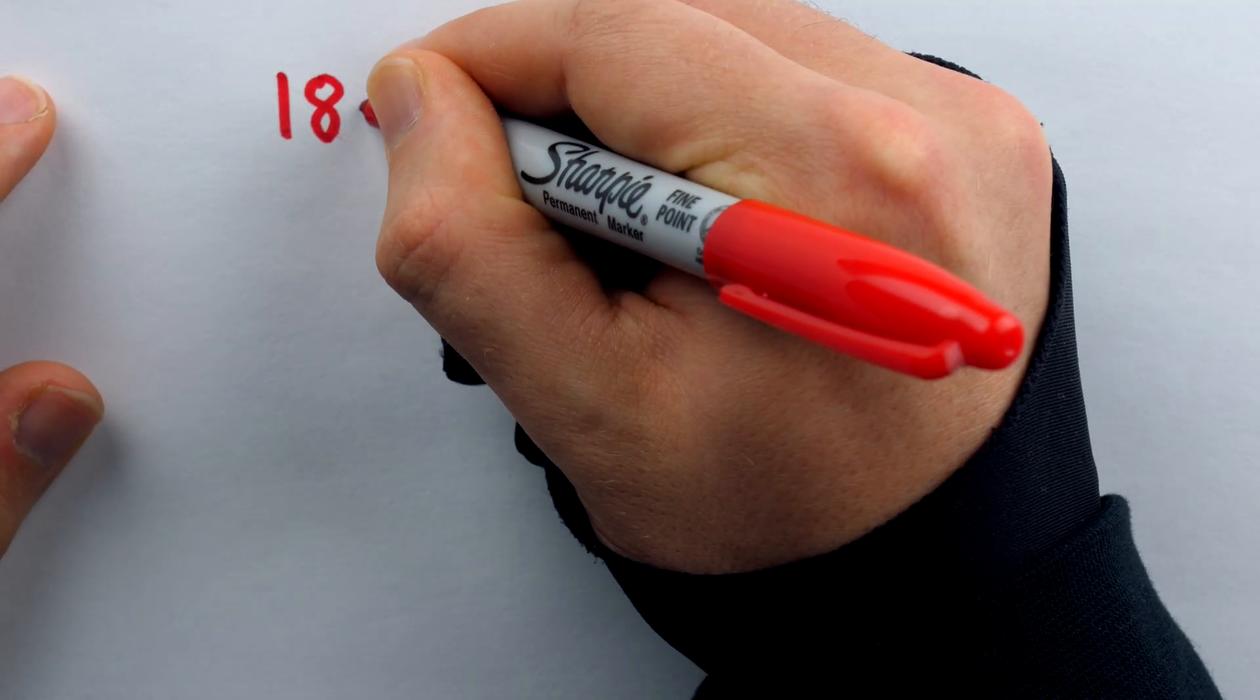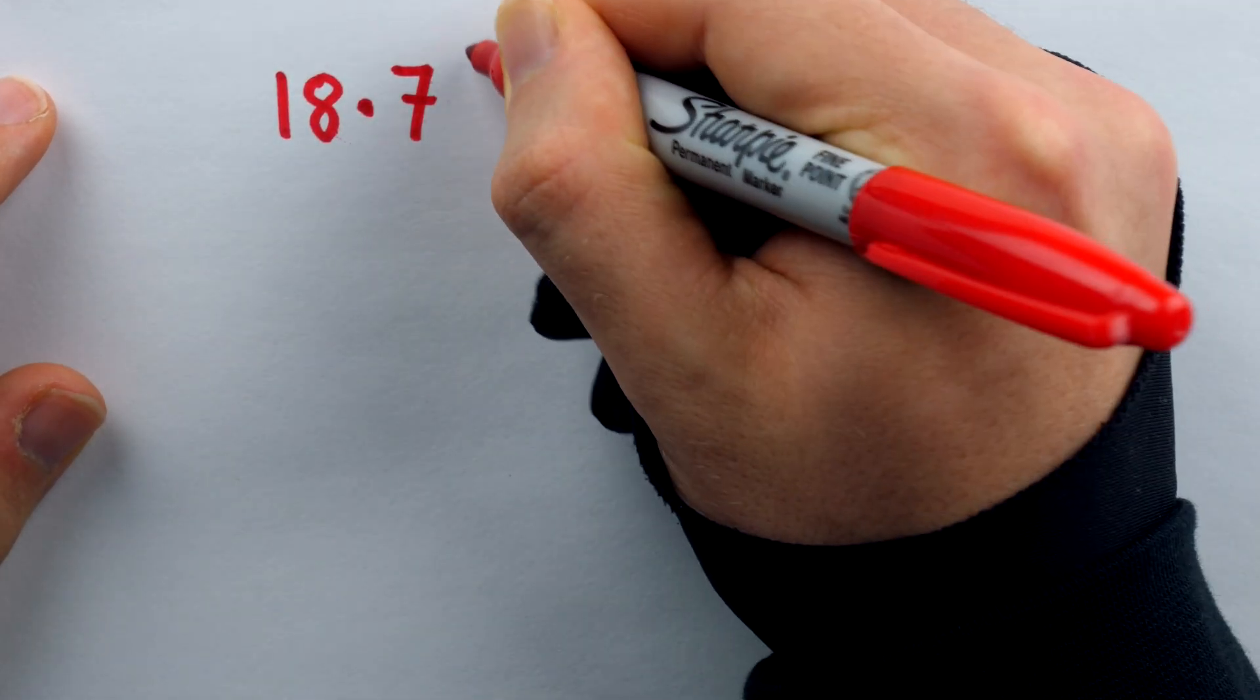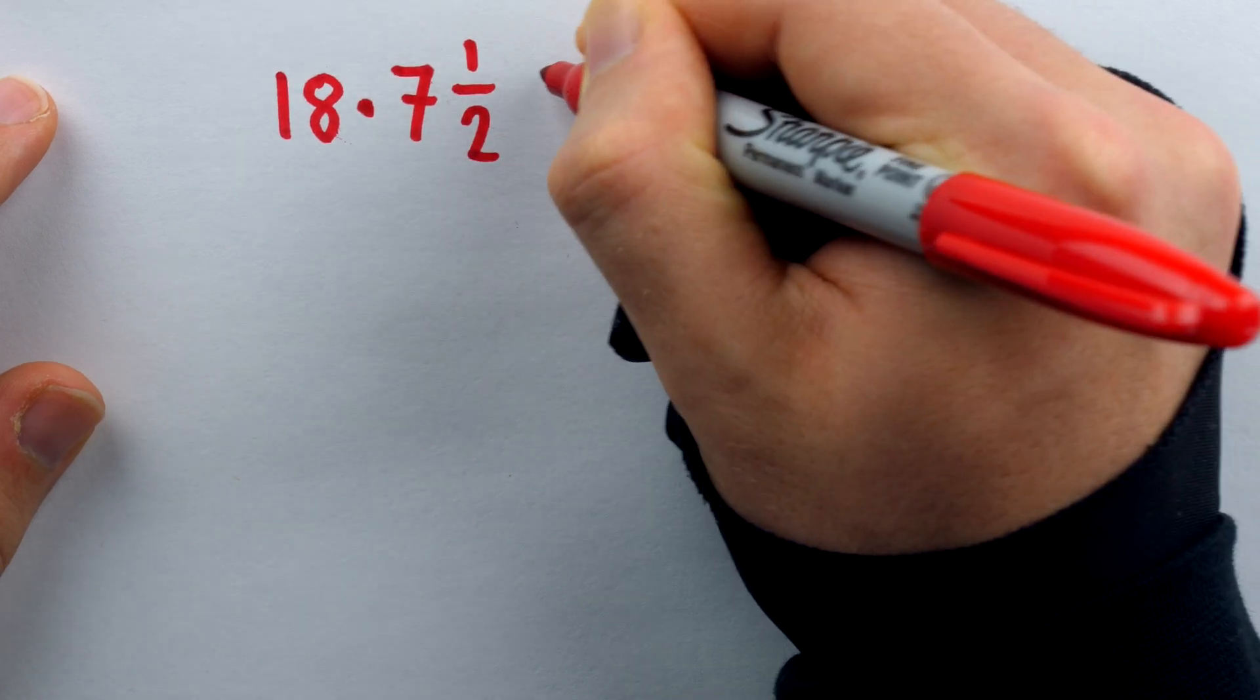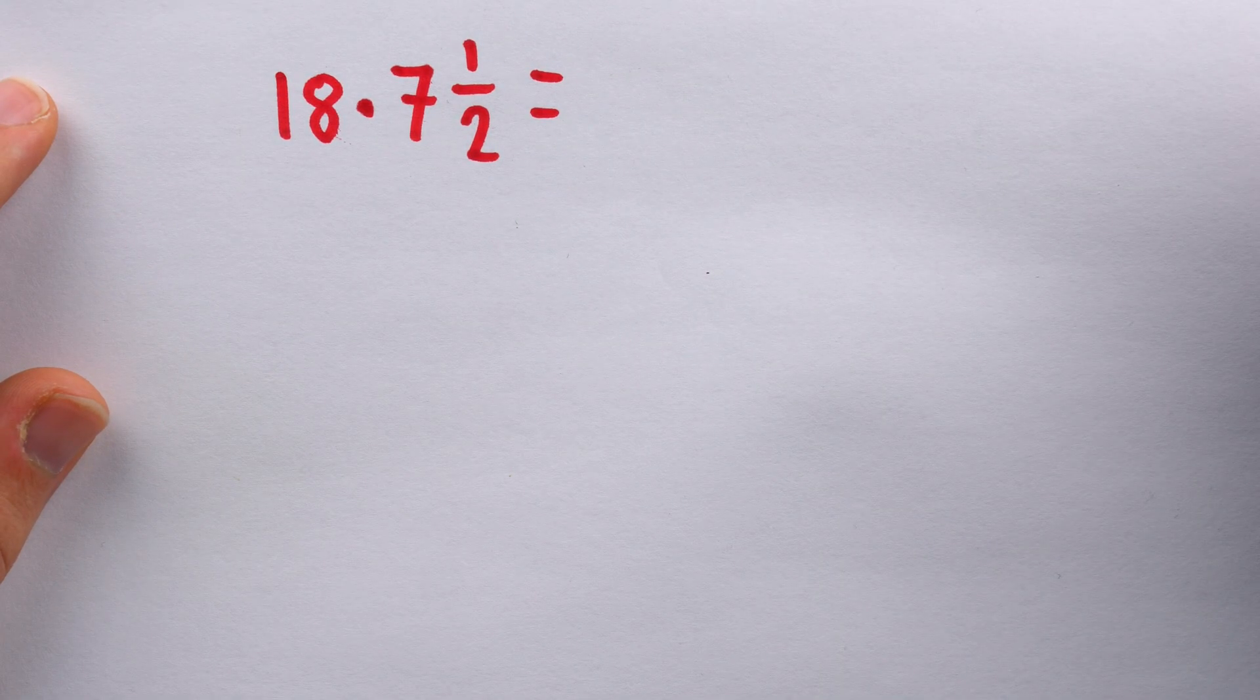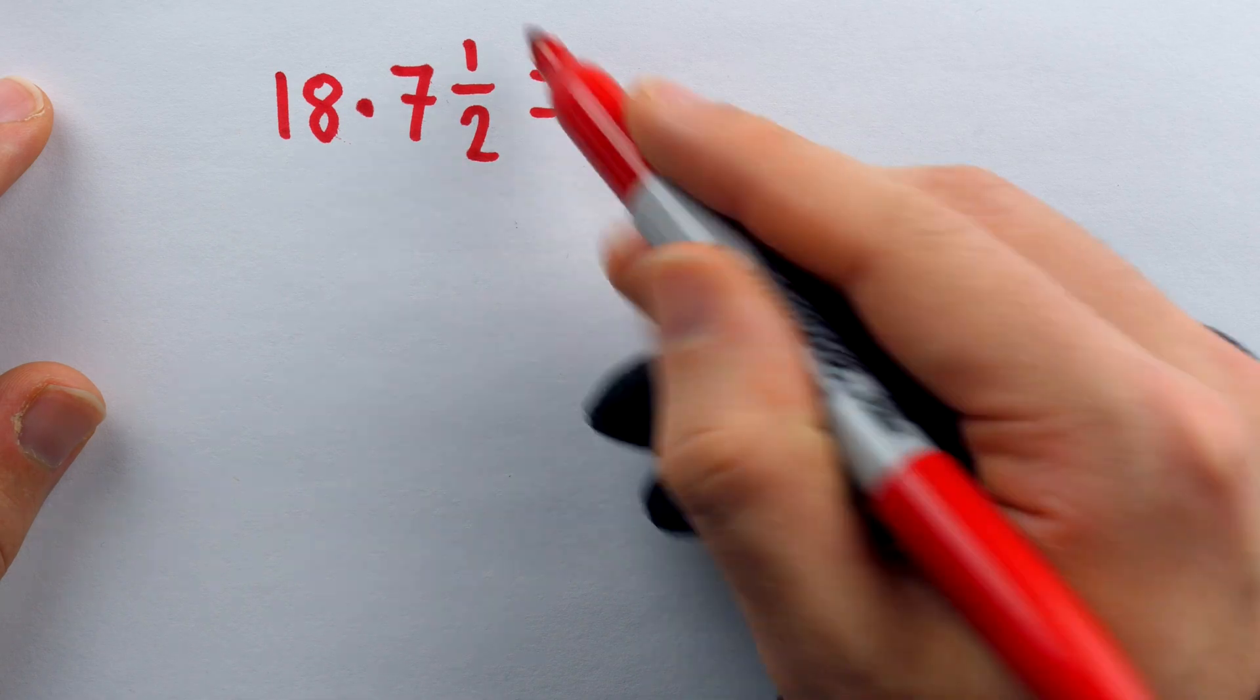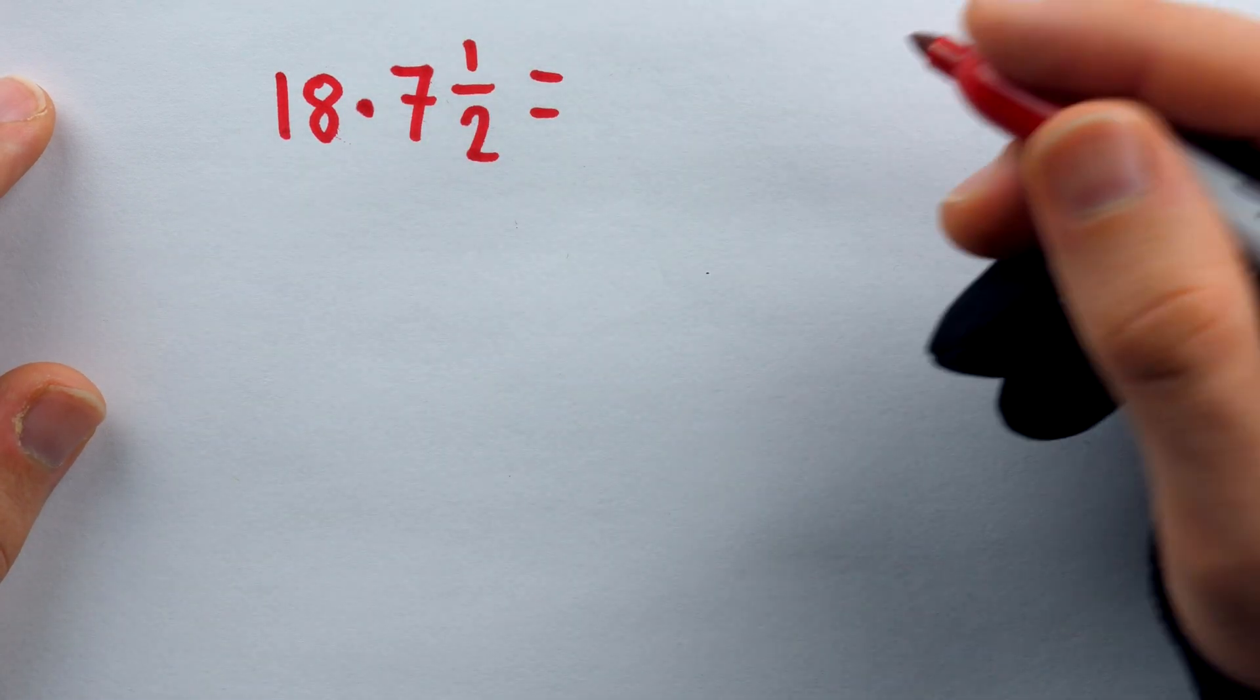If you've lived beyond the age of 12, no doubt you've noticed how often life calls upon you to multiply by 7 and a half. But how do we do it? If we've got 18 times 7 and a half, what's the best strategy?